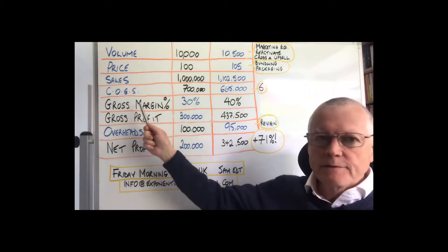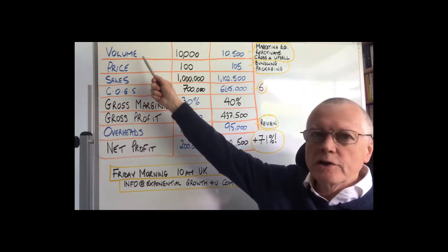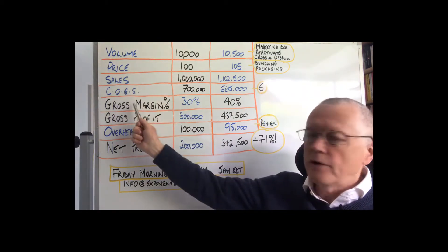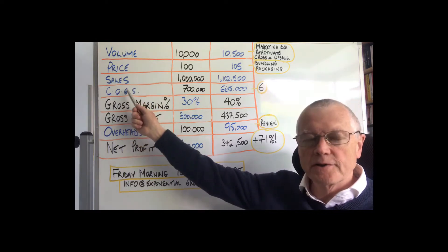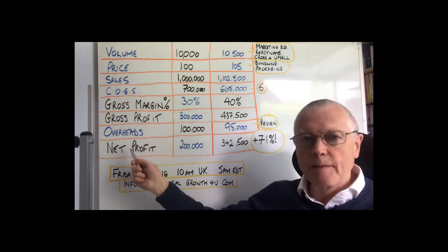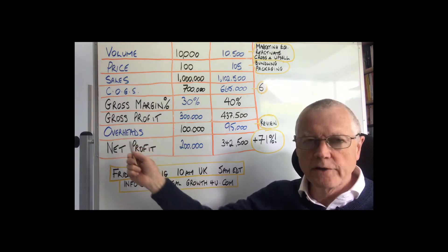So it all revolves around four key numbers: your volume, your price, your gross margin which is determined by your costs of goods sold, your variable costs, and then your net margin which is decided by your other overheads.